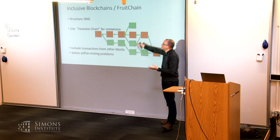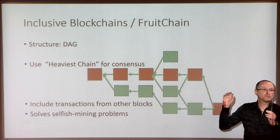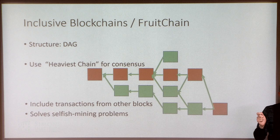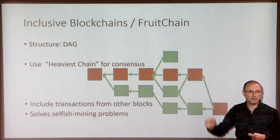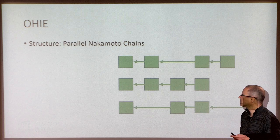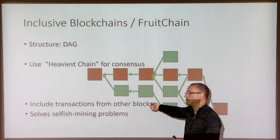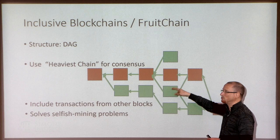Next are inclusive blockchains and fruitchains — quite different but with a similar flavor. The structure is now a DAG with more than one pointer, though we still care about the longest chain for determining correct history. In inclusive blockchains, we still choose the heaviest chain for history, but we can also include transactions from off-chain blocks that don't conflict with the main chain. Fruitchain has a completely different incentive mechanism — you get rewarded not just for generating a block but also for generating uncles, solving many selfish mining problems.